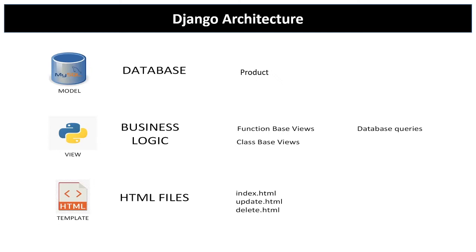This is basically there to implement what we call separation of concerns as far as software engineering is concerned. The models are usually going to represent our database, so anything that has to do with the database you are going to create a model. For instance, in the demonstration you saw me have some products, and those products were going to be added into a database or a database model.